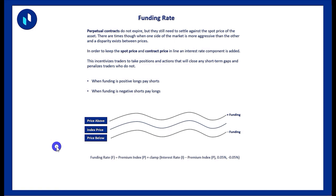In order to keep the spot price and the contract price in line, there is an interest rate component added. This is not the same interest rate talked about in the actual formula for deriving the funding rate, which takes into account the interest rates between USD and Bitcoin. The funding rate is used to incentivize traders to take positions that will close any short-term gaps, and it penalizes traders who do not — keeping the spot and contract price in line.